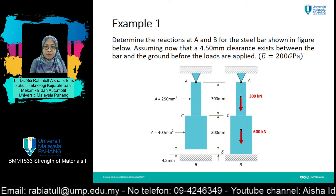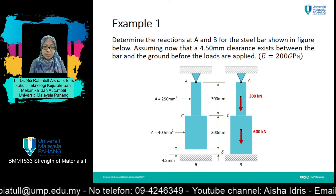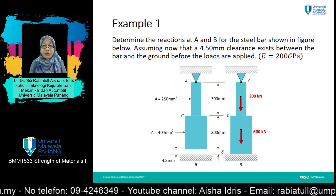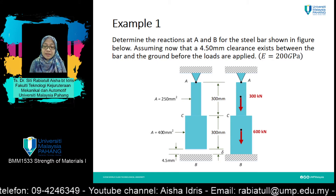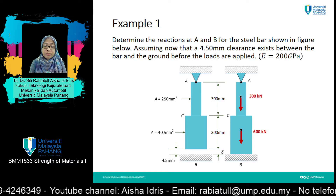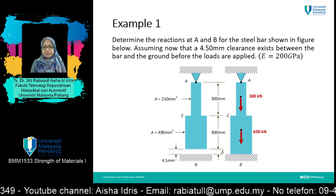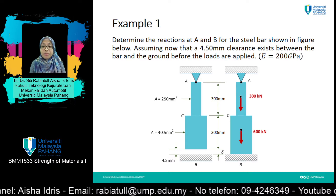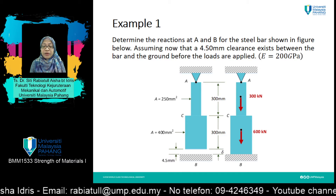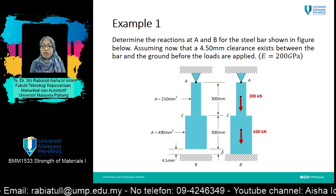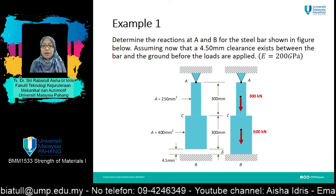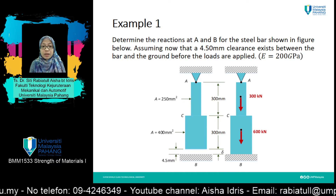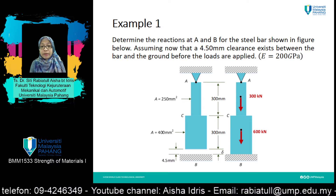For today we are going to look at an example straight away, taking knowledge from the previous lectures 4 and 5. Determine the reaction at A and B for the steel bar shown in the figure below, assuming a 4.5 mm clearance exists between the bar and the ground before the loads are applied. The value of Young's modulus E is given as 200 gigapascal.